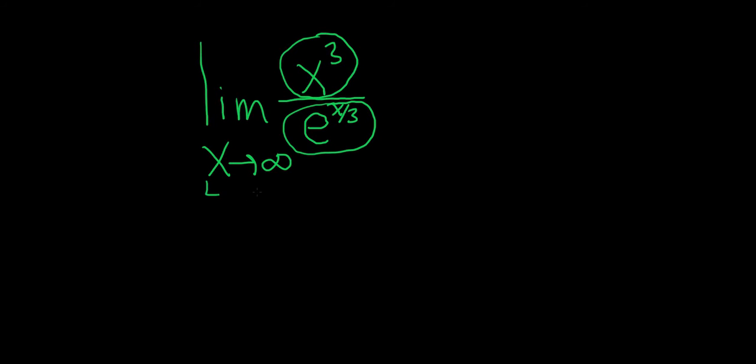So when x gets really big, the exponential function on the bottom grows faster than the polynomial up top. So because the growth rate on the bottom is bigger than the growth rate on the top,